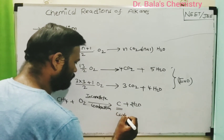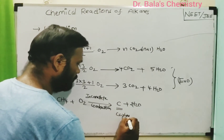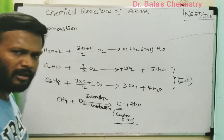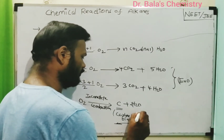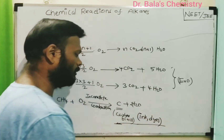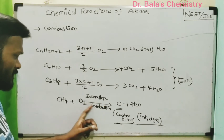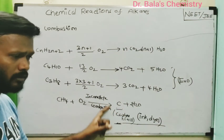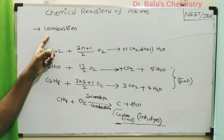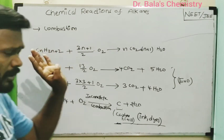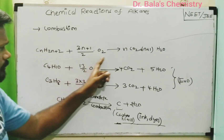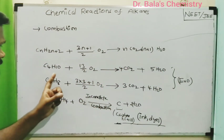Carbon black is produced through incomplete combustion. If you use incomplete combustion, it will produce a carbon black residue. This carbon black is used to make ink as well as dyes, such as in paint. This is a very important aspect of the combustion reaction — oxygen supply is essential.